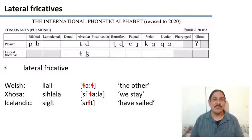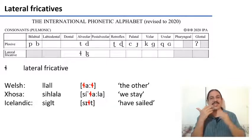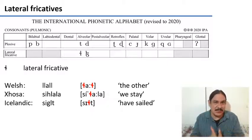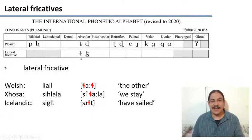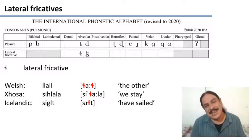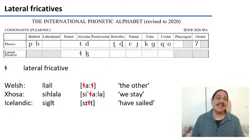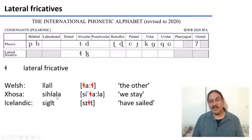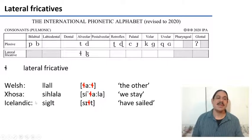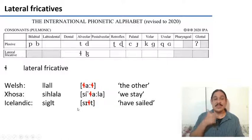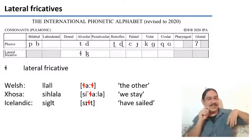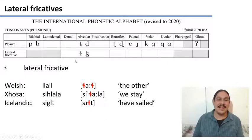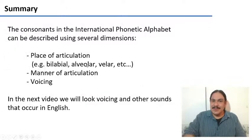Finally, we have lateral fricatives, where your tongue goes sideways and also forces the air out with turbulence, like we saw with fricatives. Many languages have this sound — for example, in Welsh, 'slala' means 'we stay', and Icelandic has them too, as in 'silt'. The tongue moves sideways and forces the air through the partial opening so that you get turbulence — those are lateral fricatives.